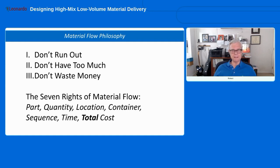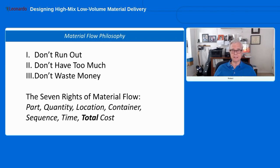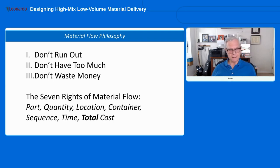In terms of doing things correctly, we have the seven rights of material flow. We need to have the right part — including the right revision letter if that's an issue — in the right quantity. It's a calculated, engineered quantity. We need to deliver it to the right location, in the right container, in the right sequence, at the right time, and with the right total cost. I put 'total' in bold because it's not just material handling costs we're talking about.